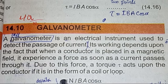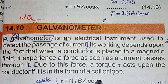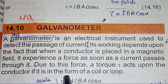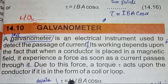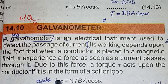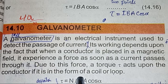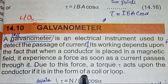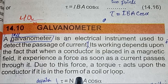From this formula τ = NIBA cos α, there are 6 terms. If any 5 are given, you can calculate the 6th one. So from this formula you can calculate torque, number of turns, amount of current, magnetic field, area, and angle alpha.